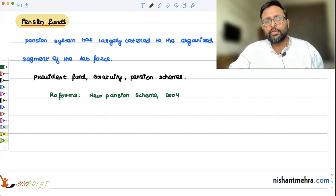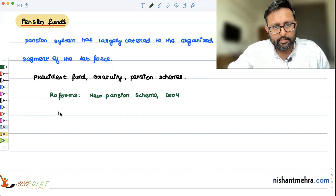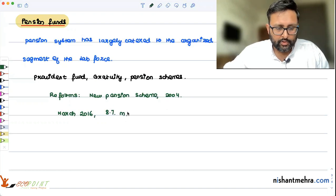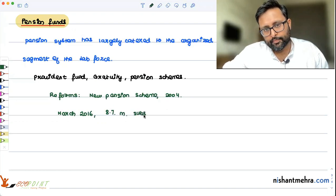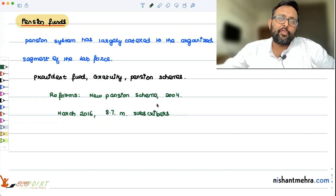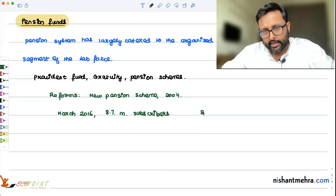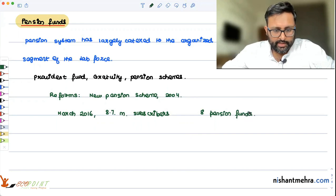There were reforms as there was the new pension scheme which was introduced in 2004. As of March 2016, there were 8.7 million subscribers. A subscriber can actually find out which pension fund he wants to invest in. He can select any one of the eight pension funds.